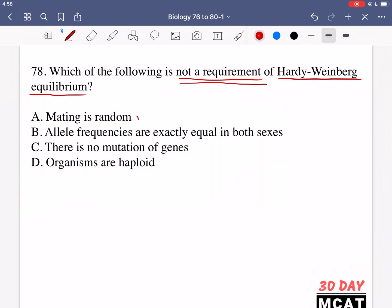Option A is saying mating is random. Yes, that is something that the Hardy-Weinberg equilibrium requires. B is saying allele frequencies are exactly equal in both sexes. Yes, this is also something which is required for us to use this equation.